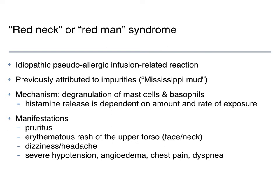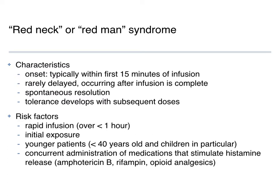The mechanism is not fully understood but is thought to be related to mast cells, basophils, and histamine release. That histamine release is dependent upon the amount and importantly the rate of exposure to vancomycin. Manifestations include pruritus, erythematous rash on the upper torso, face, and neck, dizziness, and headache. In severe cases: hypotension, angioedema, chest pain, and dyspnea — though those severe manifestations are not very common. It resolves when you slow down the infusion. Importantly, don't label patients as vancomycin allergic.